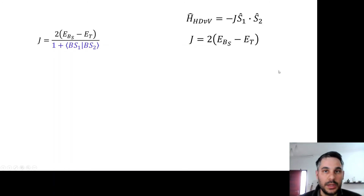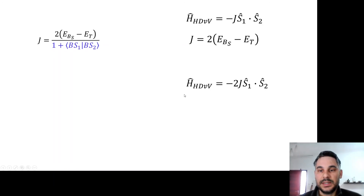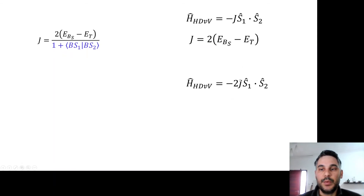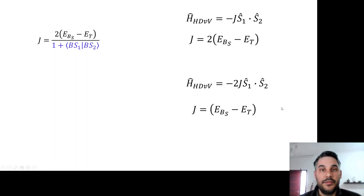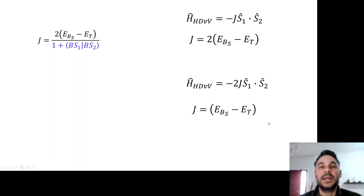This definition came from using a Heisenberg-Dirac-Van Vleck Hamiltonian written as minus J times S1 times S2. But in many places, including ORCA, a different convention is used: minus 2J times S1 times S2. There are mostly historical reasons for this, but with this different definition we get that J equals the difference in energy between the broken symmetry and triplet states. So if the broken symmetry state is the ground state, J will be negative.